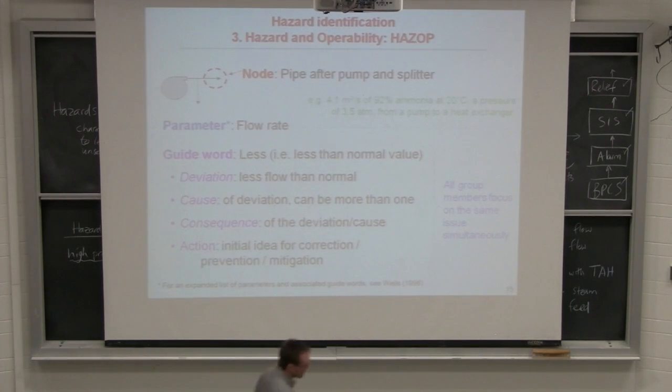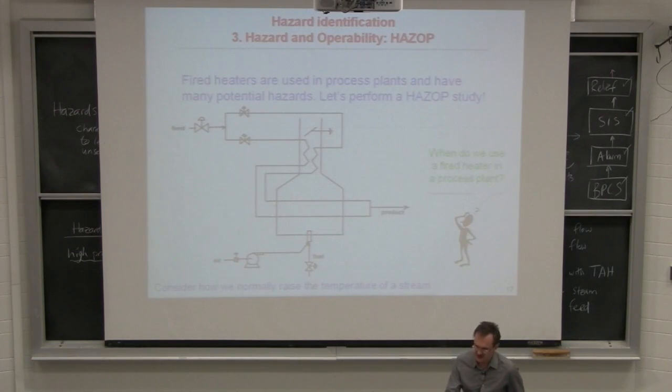When we've looked at that parameter flow rate, and then the guide word less, the next approach is to look at the guide word of more. And then the next approach is to look at the guide word of no flow. Then the next one is to look at reverse flow. What you'll typically find is that the actions you take to prevent less flow are going to be the same actions that you would take to prevent no flow. So there's a lot of overlap between this. It goes a little bit quicker as soon as you get into the process.